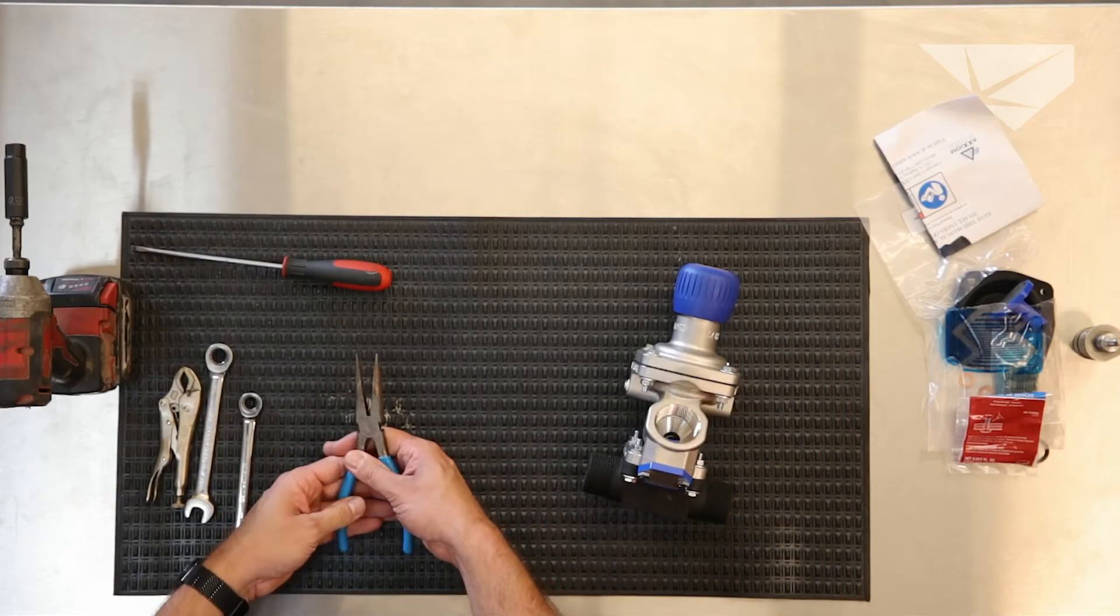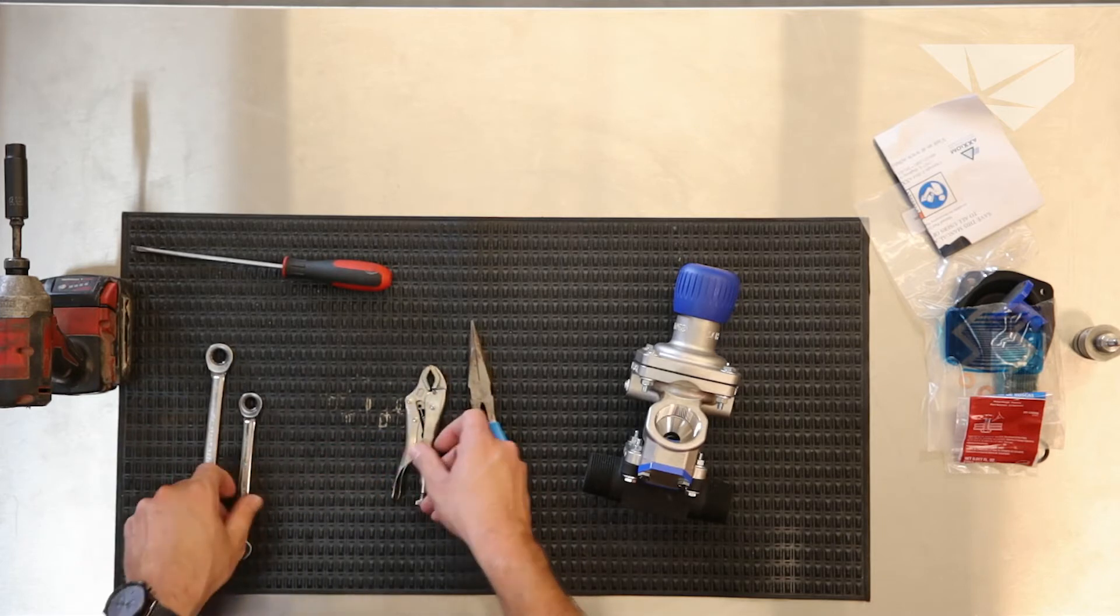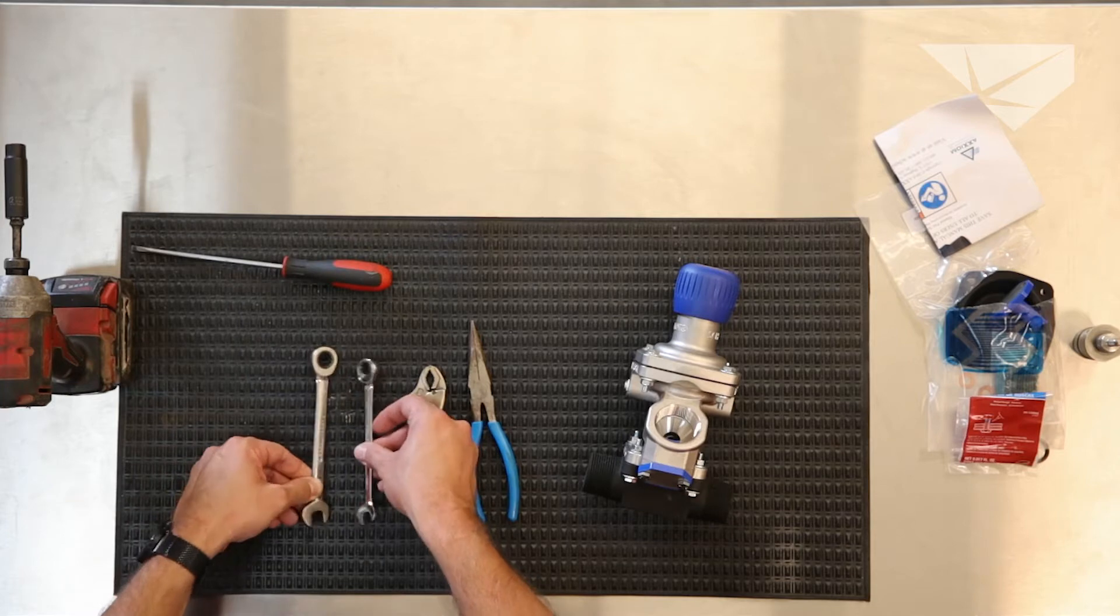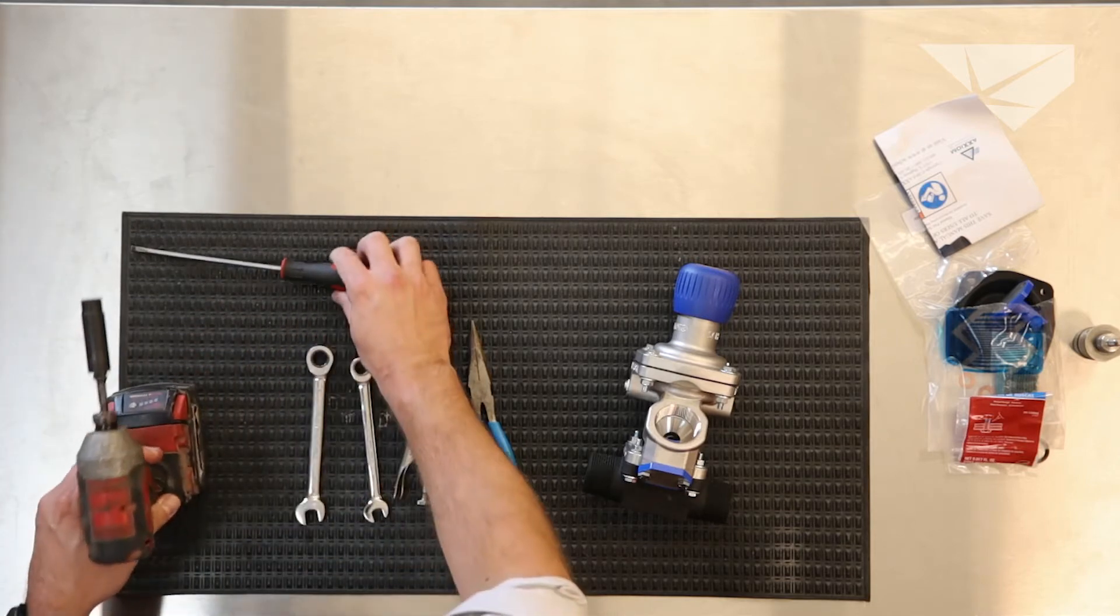So let's go over the parts that we're going to need today. A pair of needle nose pliers, a small pair of ice grips, 7/16th wrench, a half inch wrench, the drill driver to cut down on our time, and a flathead screwdriver.